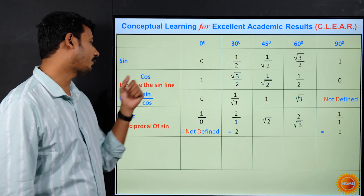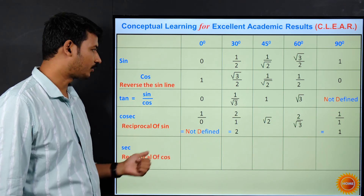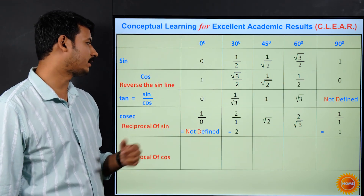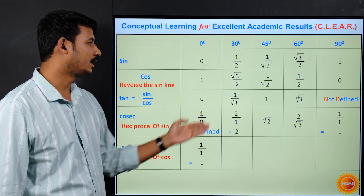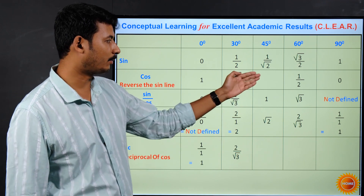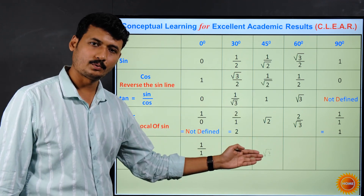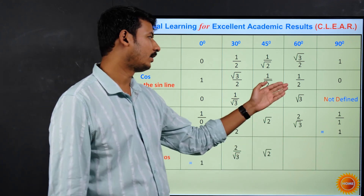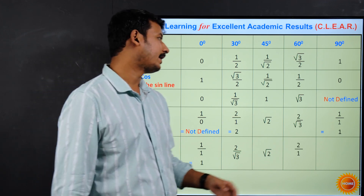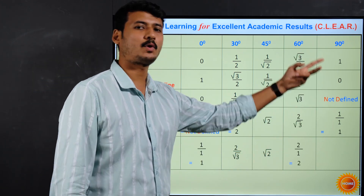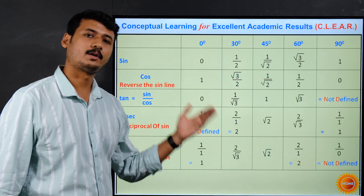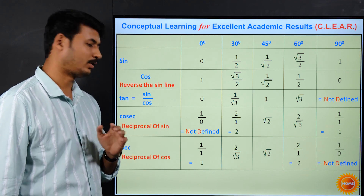The reciprocal of cos gives us sec. So: sec 0° = reciprocal of 1 = 1; sec 30° = reciprocal of root3/2 = 2/root3; sec 45° = reciprocal of 1/root2 = root2; sec 60° = reciprocal of 1/2 = 2; and sec 90° = reciprocal of 0, which is 1/0 = not defined.